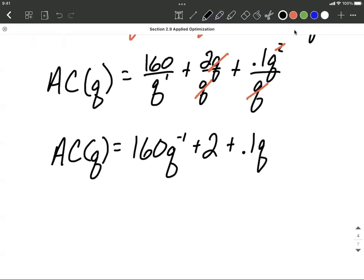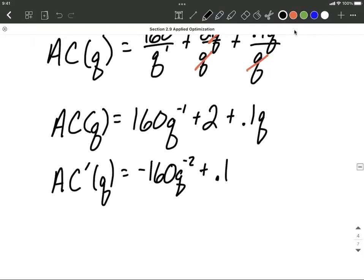So far, it's just been reducing down our average cost. The next thing we'd like to do is actually take the derivative and get working on finding critical values. The derivative here, using the power rule, is going to be negative 160Q to the negative second. Derivative of 2, it's a constant, so it's going to be 0 plus 0.1. This is negative 160 over Q squared, making it positive again by moving it down to the denominator.